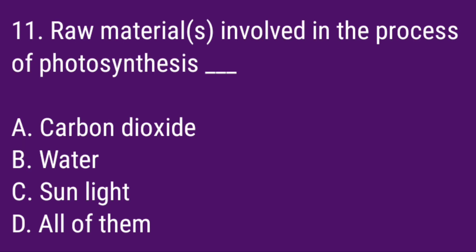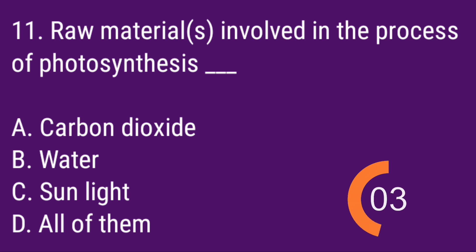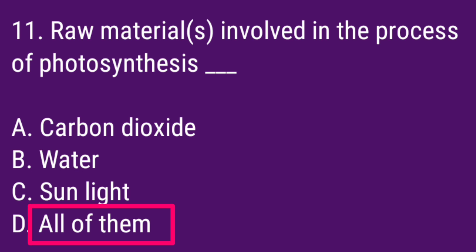Q11. Raw materials involved in the process of photosynthesis. Correct answer: All of them — Carbon dioxide, Water, Sunlight.